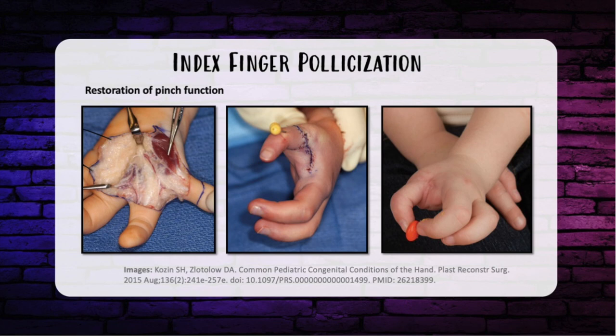With pollicization, the index finger MCP joint becomes the new thumb CMC joint. The first palmar interosseous muscle acts as the adductor pollicis. The dorsal interosseous acts as the abductor pollicis brevis. The extensor digitorum communis acts as the abductor pollicis longus. The EIP is used as the EPL tendon. Timing for surgery is usually about one year of age, though some perform it as early as six months or wait until age two to three.